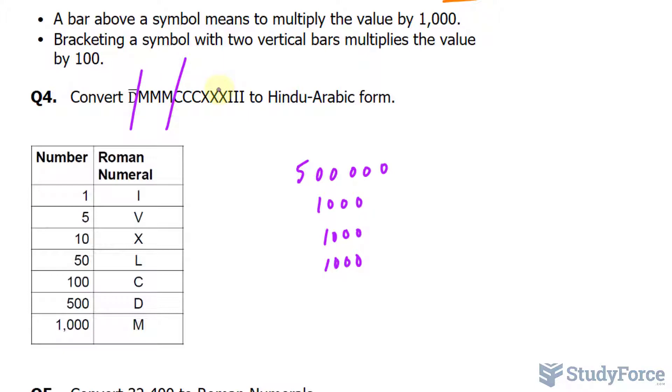We have three C's in a row. That's 100, 100, 100. X's. 10, 10, and 10. And three I's, which represents 3. Adding up all these numbers together, we get 500 and 3,333.